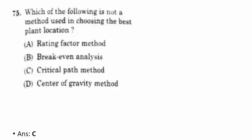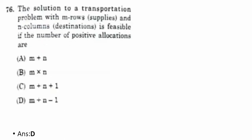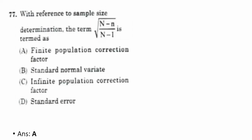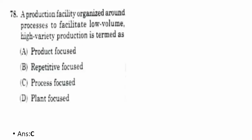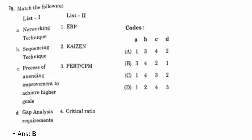Seventy-fifth question: which method is not used in choosing the best plant location? The correct option is C — critical path method. Seventy-sixth question: in a transportation problem with m rows (supplies) and n columns (destinations), the feasible number of positive allocations is m + n − 1. The correct option is D. Seventy-seventh question: the term √((N − n)/(N − 1)) is termed as A — finite population correction factor.